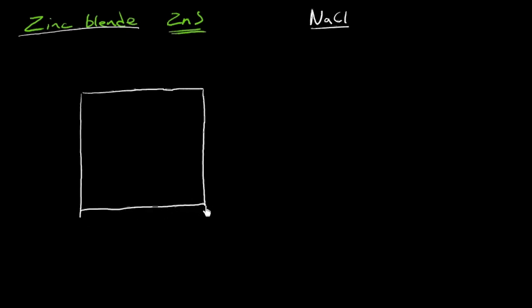It's not just zinc and sulfur that has this arrangement. There's other important semiconductor devices, for example, that have the zinc blende crystal structure. And let's look at it, so it's cubic, all right? And so I'm going to draw a cube.